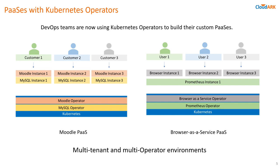Here are two examples of such PaaS that we have encountered in our work with different customers. On the left hand side, there is a Moodle PaaS built to deliver an e-learning solution on Kubernetes, using two operators: Moodle and MySQL. Moodle operator is developed in-house, and Moodle instances depend on MySQL instances delivered by the MySQL community operator. On the right hand side, there is a PaaS to deliver browser instances for developer testing, using a browser-as-a-service operator and the Prometheus operator for monitoring.